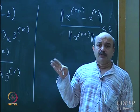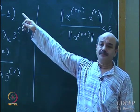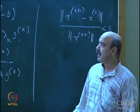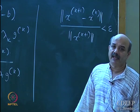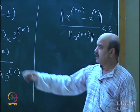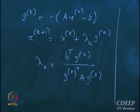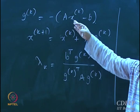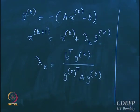Every iteration requires computing Ax_k minus B, which is the residual. When you solve the problem, G_k will be 0 — the gradient direction equals zero — which is the necessary condition for optimality for this particular objective function.